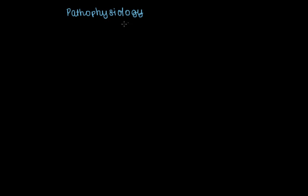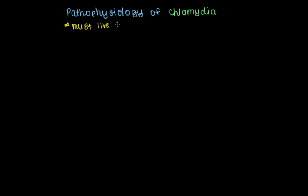Pathophysiology is the study of how a disease occurs. If we're talking about the pathophysiology of chlamydia, we're talking about how this bacterial organism hijacks the cells of our body to multiply and cause an infection. The unique thing about chlamydia is that it's not a very powerful organism — it relies on the nutrients of the host cell that it infects, which means chlamydia must live inside the host cell in order to reproduce and survive.